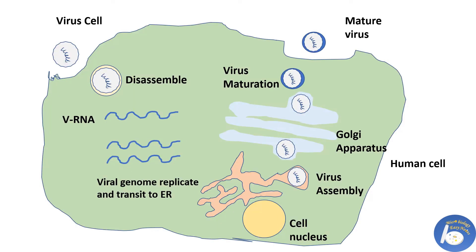For virus infection and replication: first, the dengue virus enters the human body via a mosquito bite. It reaches the human cell, attaches to its surface, and goes inside the cell by a process called endocytosis. Once it reaches the cytoplasm, the virus disassembles itself and releases its genome. The viral RNA is then translated into a single polypeptide chain.